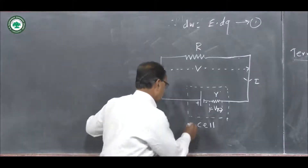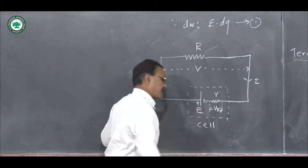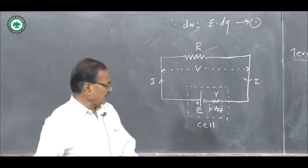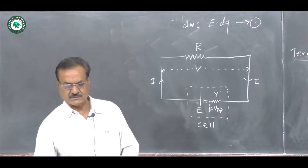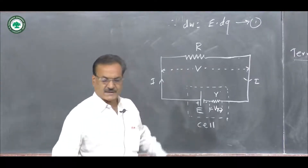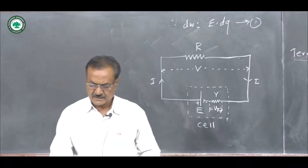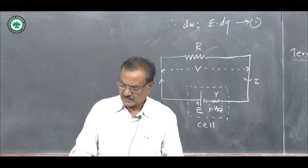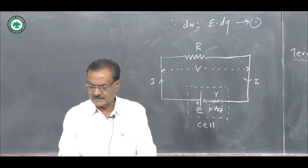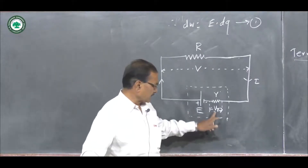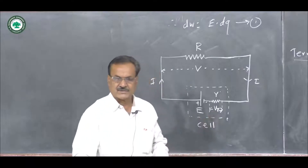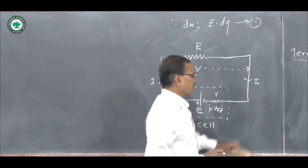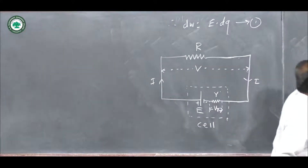In the circuit, consider E is the EMF of a cell and its own resistance is small r. Across it the external resistance R is connected. Let V be the terminal potential difference, and V_R is the potential difference across the internal resistance. Then we apply the principle of conservation of energy.